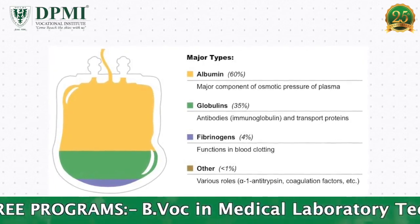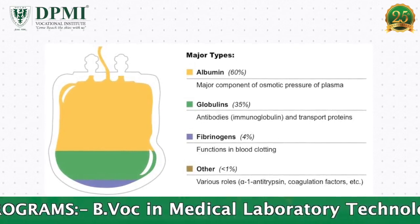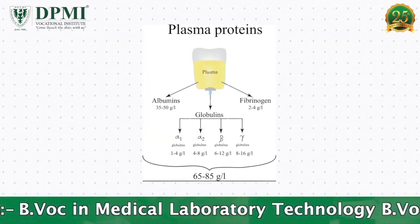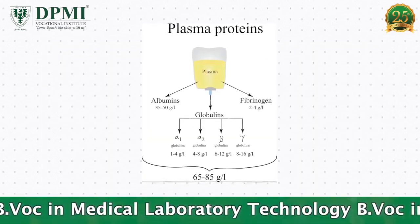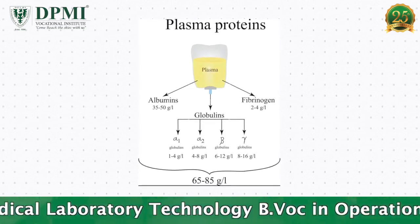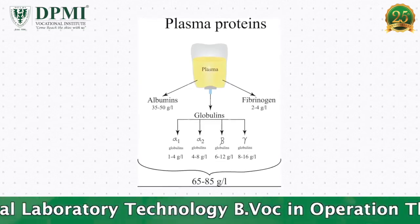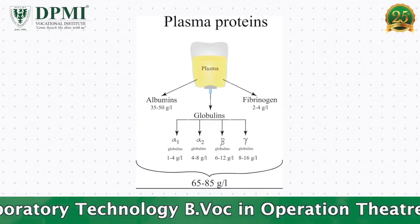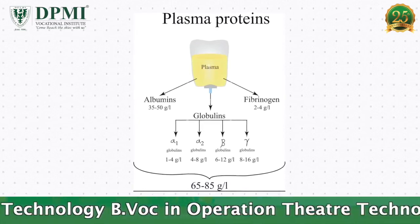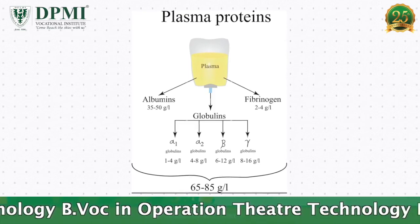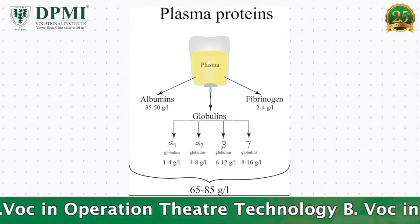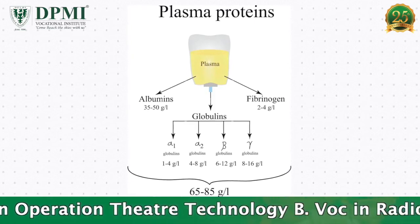Plasma proteins comprise of simple proteins such as Albumin, Globulin — including Alpha-1, Alpha-2, Beta and Gamma Globulins — Fibrinogens, Glycoproteins, Lipoproteins, Complement, Enzymes and various coagulation factors.